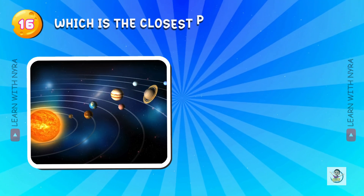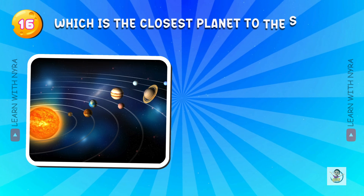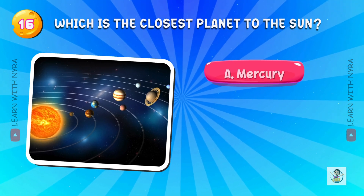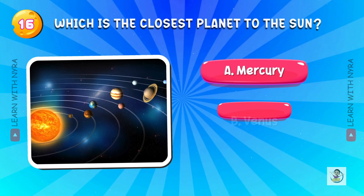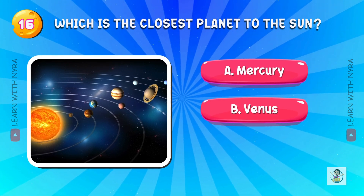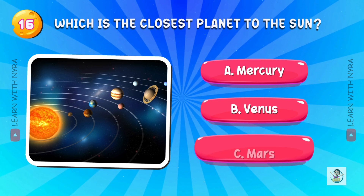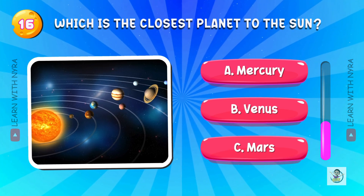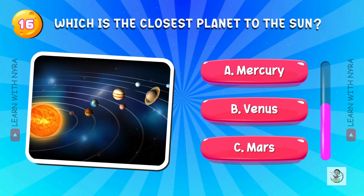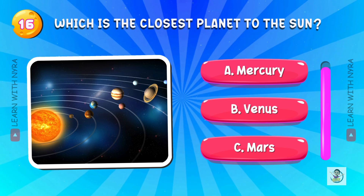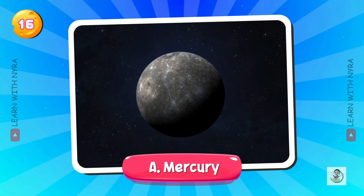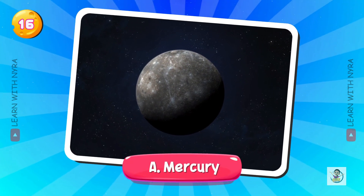Which is the closest planet to the sun? A. Mercury, B. Venus, C. Mars. And the answer is A. Mercury.